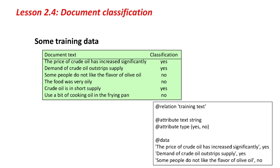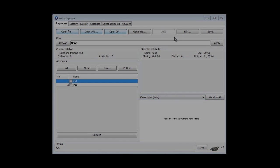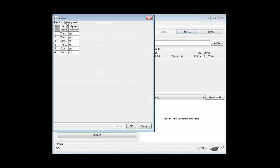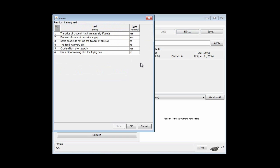We code this training set up into ARFF in the standard way. We have string attributes. In string attributes, we just take the text and surround it by quotes, just as shown at the bottom. I've loaded this data set into Weka. We can just have a look at it here — there it is, just what you saw on the slide.